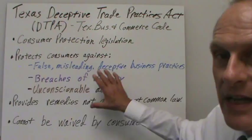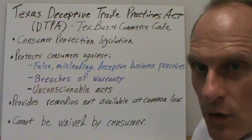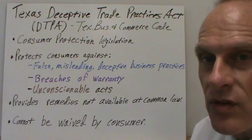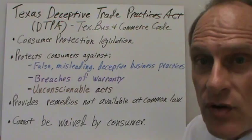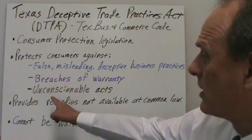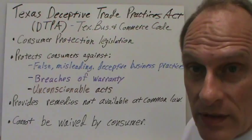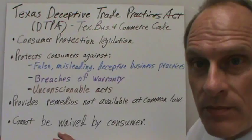It protects consumers against false, misleading, and deceptive business practices, and those will be outlined in the Act. It also gives consumers a remedy when there is a breach of a warranty, either an express warranty or an implied warranty. And it also protects consumers in the case of unconscionable actions or courses of action. It provides remedies for consumers that they would not otherwise have under the common law.